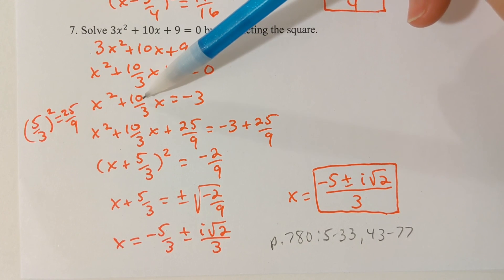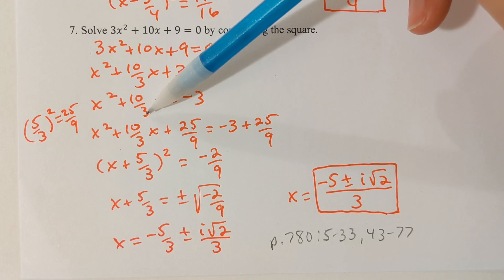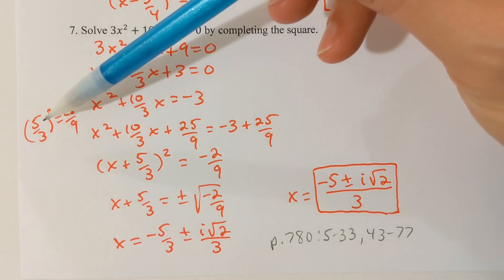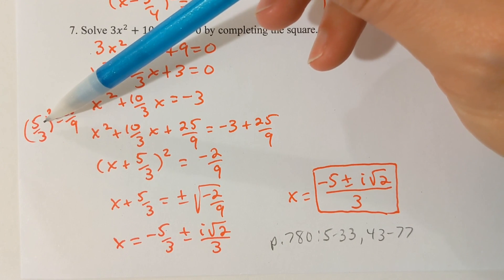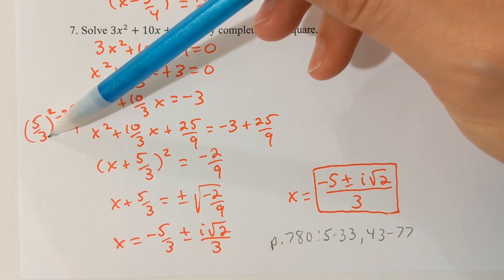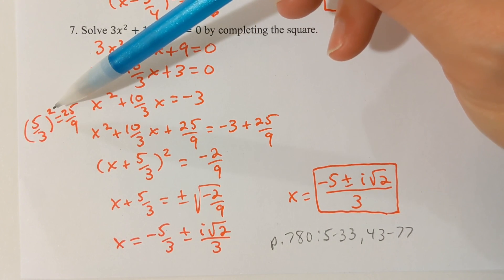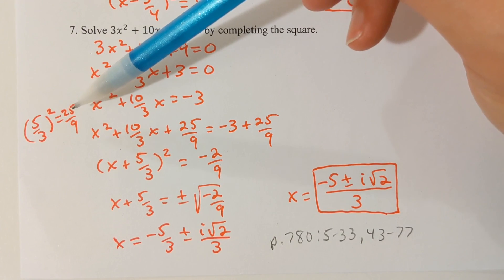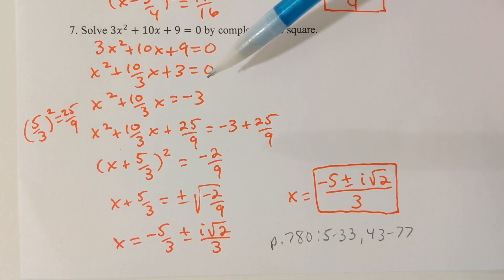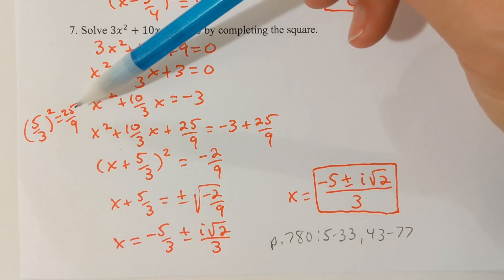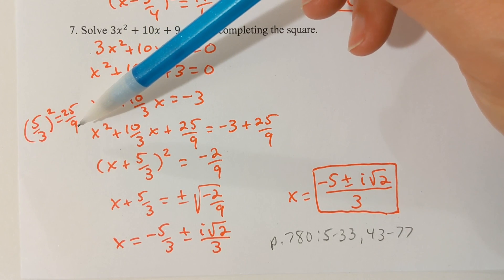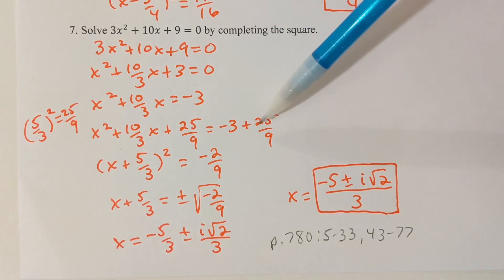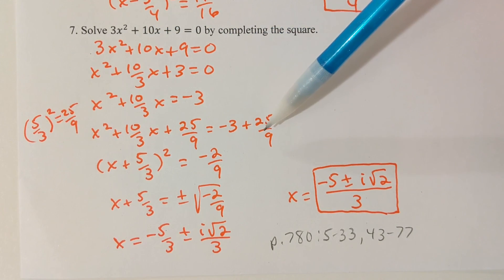Half of 10/3: the half of 10 is 5, so half of 10/3 would be 5/3, and I'm supposed to square 5/3. Five squared is 25, three squared is 9, so 25/9 is going to be the number that I'll add to both sides.